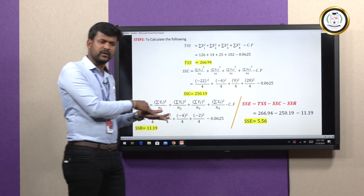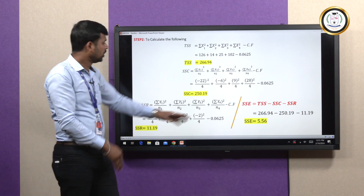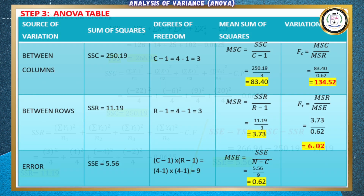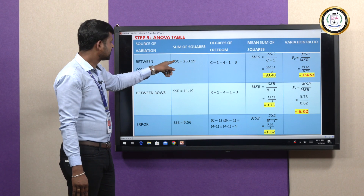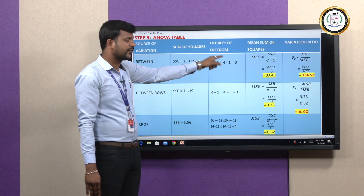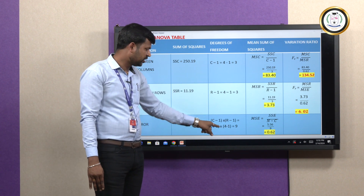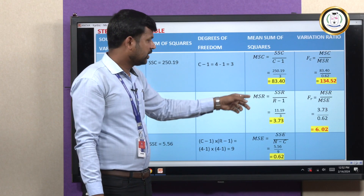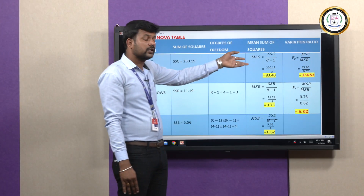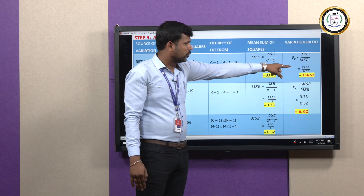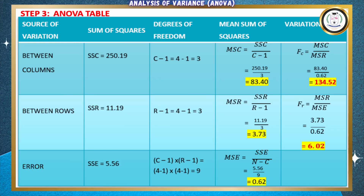We need to find the error. In the previous one-way we subtracted the column only, but here additionally we subtract the row: SSE = TSS − SSC − SSR, and the result is 5.56. The calculation is over. The ANOVA table has the additional row 'between rows.' SSC, SSR, and SSC come from the calculations. Degree of freedom: C − 1, R − 1, and for error (C − 1) × (R − 1) = 3 × 3 = 9. Mean square: MSC, MSR, then MSE. Comparing MSC and MSE — 83.40 in the numerator, 0.62 in the denominator — divide to get FC = 134.52, and similarly FR = 6.02.